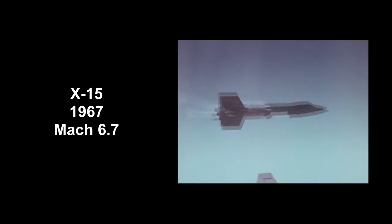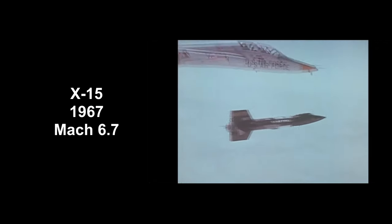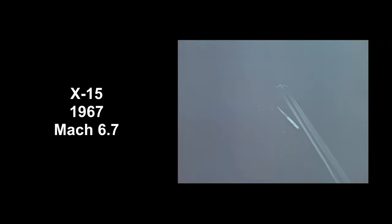The fastest rocket-powered manned aircraft was the X-15. It set the record at 7,258 km per hour in 1967. That's Mach 6.7.